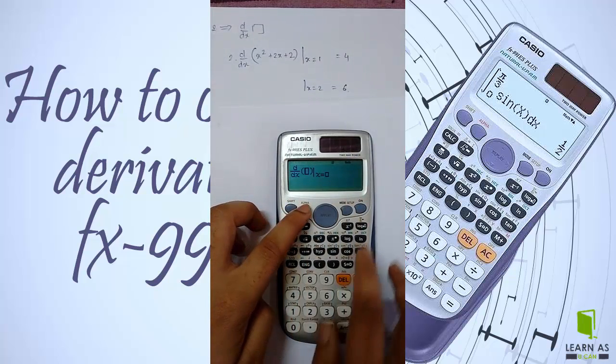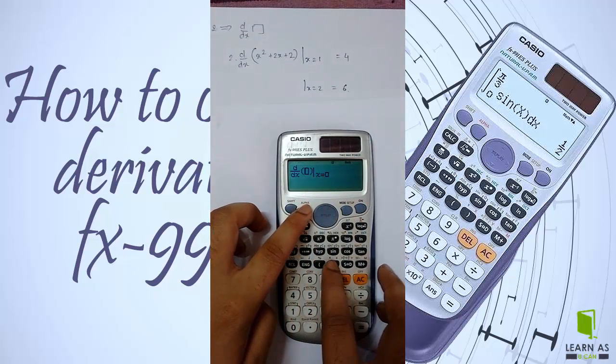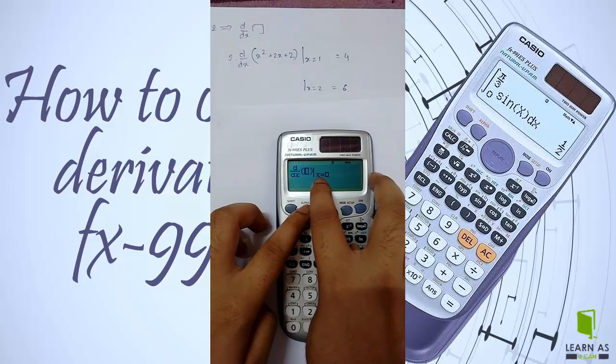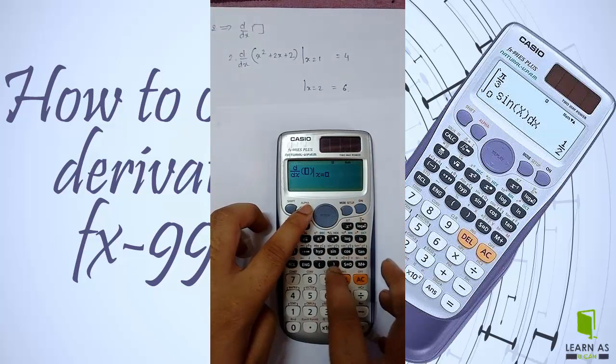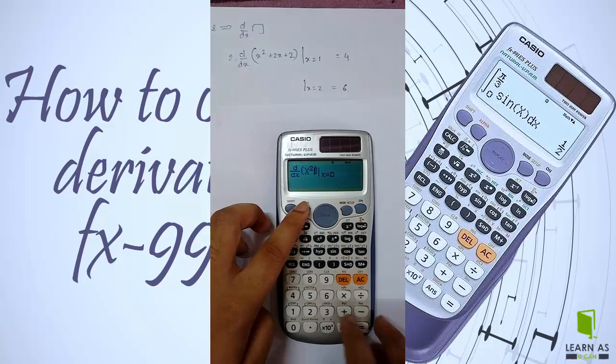The function should be in terms of x. By default, x is already there, so use x, not y. Now I'll enter the function: x squared plus...